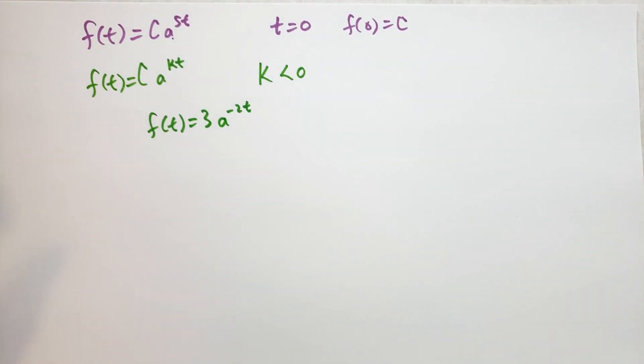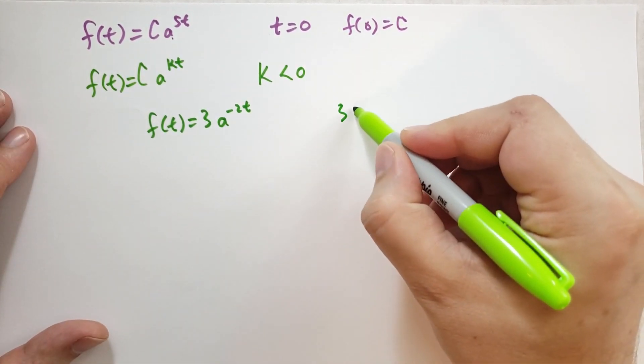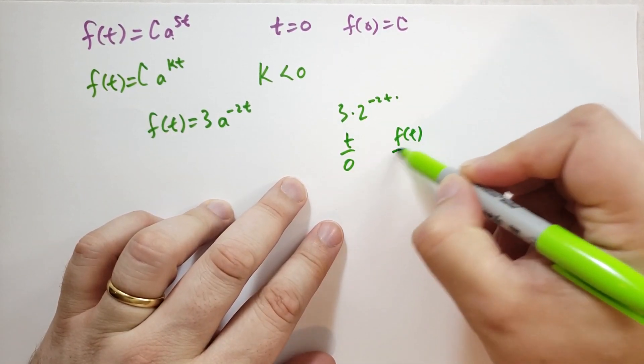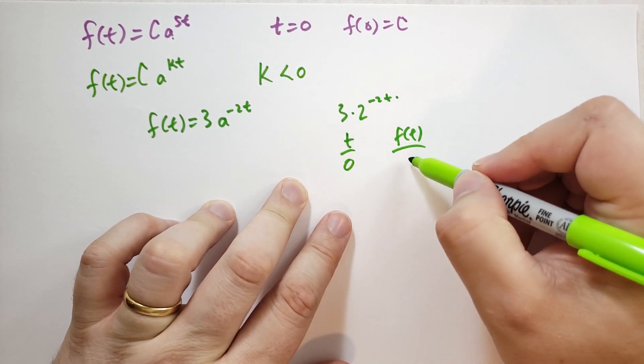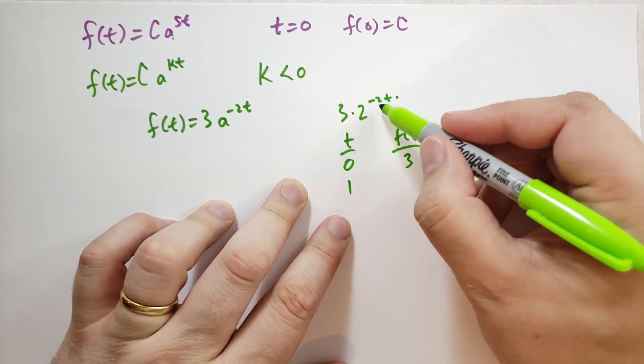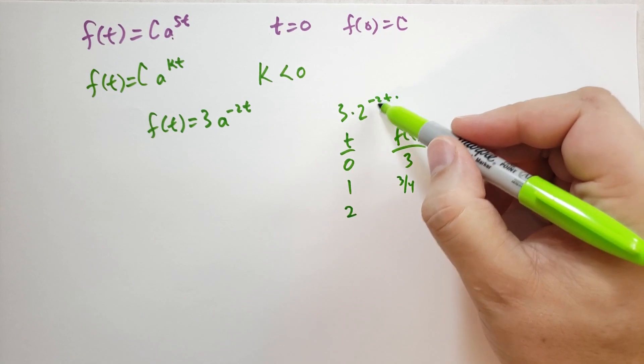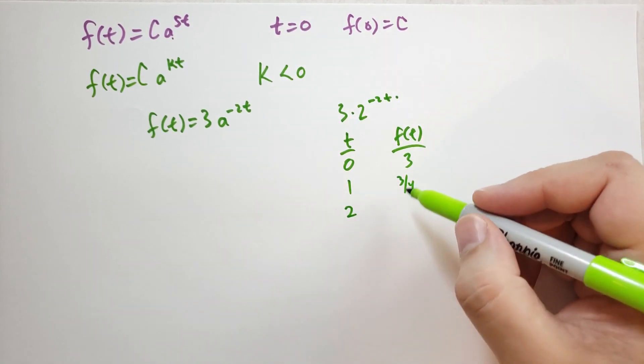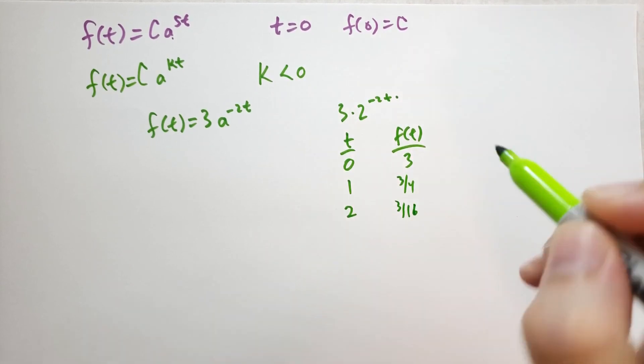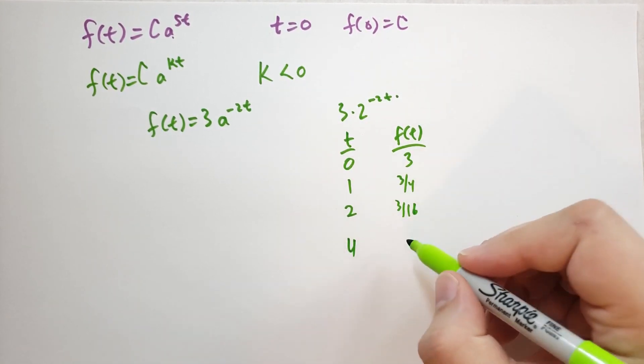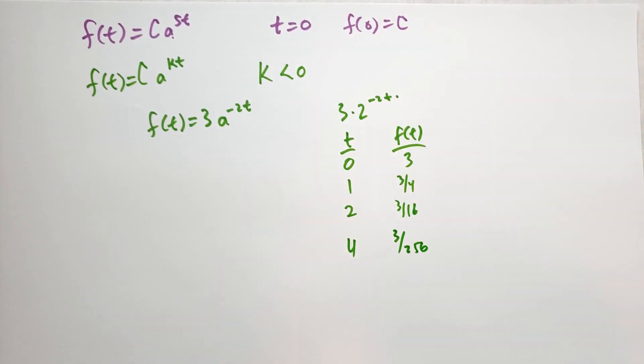Then at t equals 0, we would just get f(t) equals 3, because 2^0 is 1. At t equals 1, we're going to get 2^(-2), so that's 1 quarter, giving us 3 quarters. At t equals 2, that's 2^(-4), which is 1/16, so that's 3 sixteenths. You can see it fairly rapidly decreases over time. And after 4 years, we're going to get 2^(-8), which is 1/256. So we're going to get 3 over 256. So it's going to fairly rapidly disintegrate.